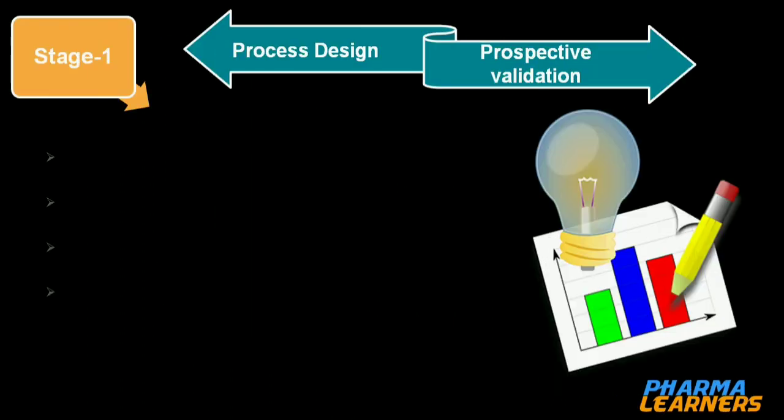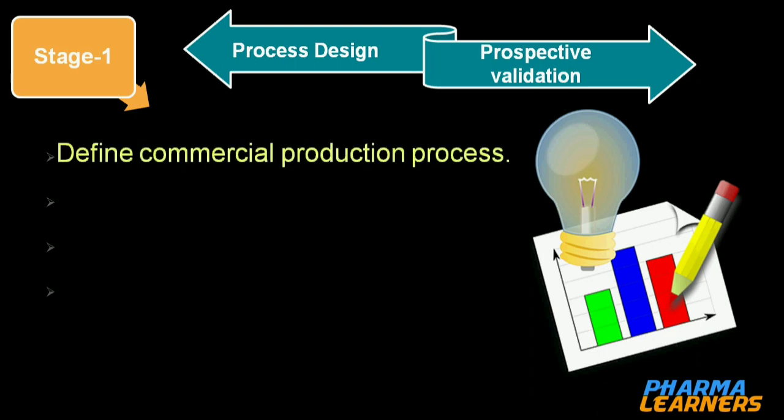Starting with stage 1, which is process design or prospective validation. At this stage, we define the commercial production process which is suitable for commercial manufacturing. We take various pilot and scale-up batches to identify which quality attributes and which process parameters are critical.